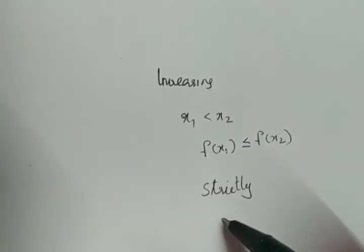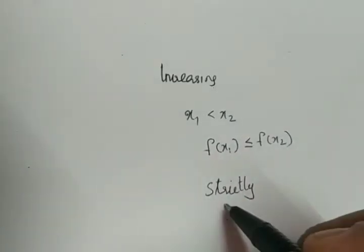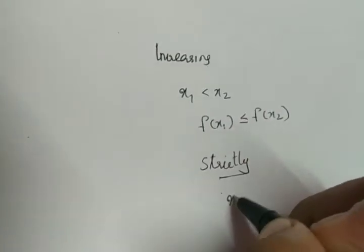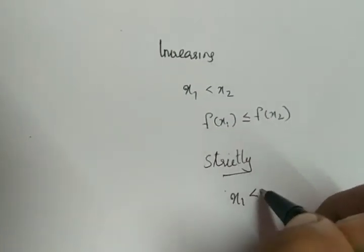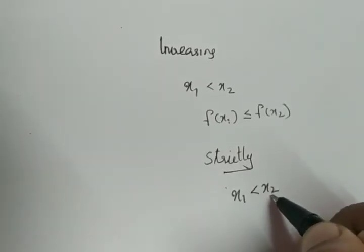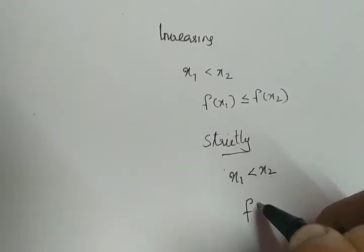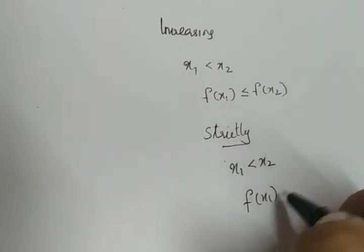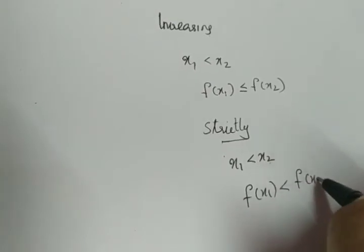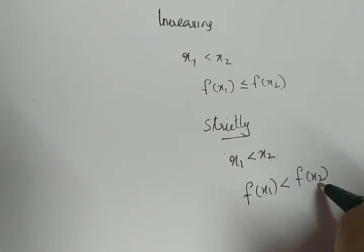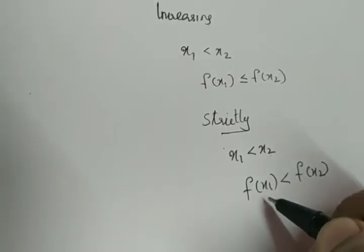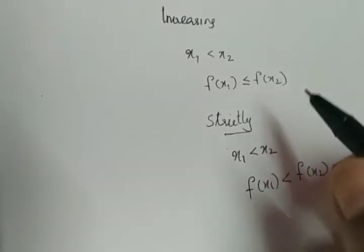For a strictly increasing function, the graph moves upwards, meaning if x1 is less than x2, then as x takes a greater value, f of x1 will be strictly less than f of x2 — f of x2 will be taking greater values than f of x1.